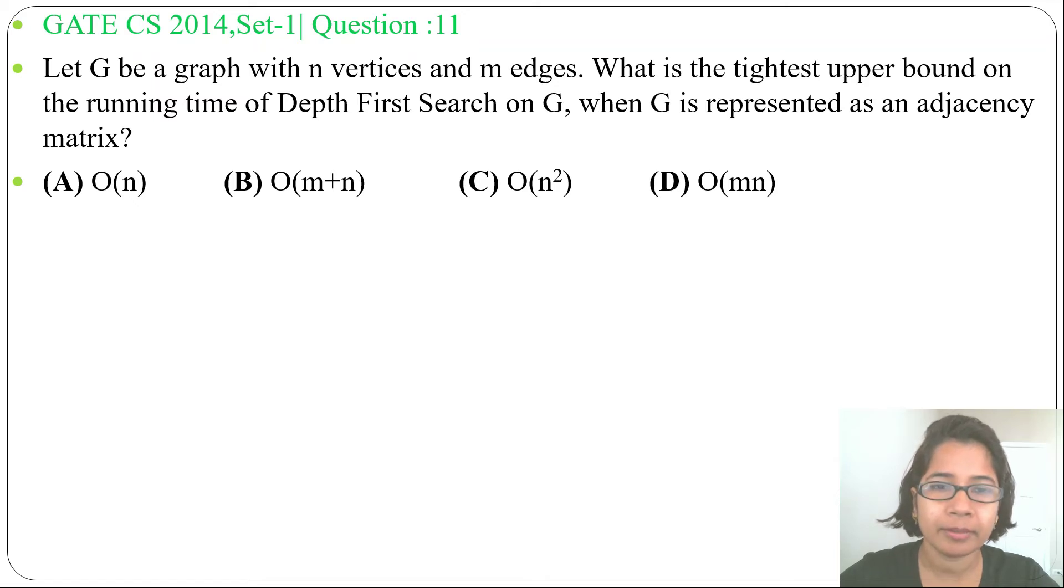Hi, let's solve the next previous question of brute force approach. This question was asked in GATE CS 2014 Set 1, Question Number 11. Let G be a graph with n vertices and m edges. What is the tightest upper bound on the running time of Depth First Search on G when G is represented as an adjacency matrix?